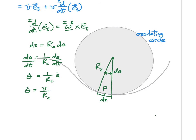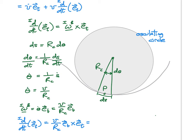Now we see the advantage of defining the binormal direction: omega_B as observed in I is always equal to theta-dot in the binormal direction, or V divided by r_c in the binormal direction. Substituting back into our expression for the time derivative of E_T, we get (V / r_c) times the binormal vector crossed with E_T. Since the binormal cross tangential equals the normal vector, this gives us (V / r_c) in the E_N direction.